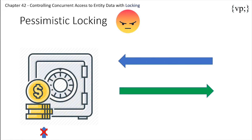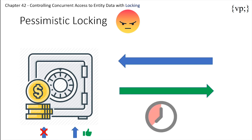Pessimistic locking is a better strategy than optimistic locking when the underlying data is frequently accessed and modified by many transactions. You'll get fewer frustrated clients, but it may slow down the application since every transaction request has to wait for each one ahead of it to complete. To limit the slowdown, you can programmatically set a locking timeout, which waits for a certain amount of time before unlocking the data again.